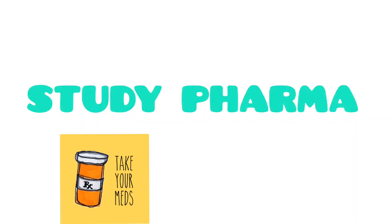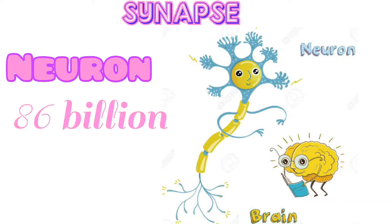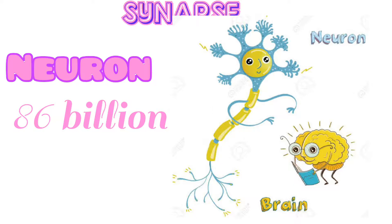Hello everyone. In today's video I'll explain about synapse and the types of synapse. Before we talk about synapse, let's see what's a neuron. A neuron is a nerve cell. The brain itself is made up of approximately 86 billion neurons.